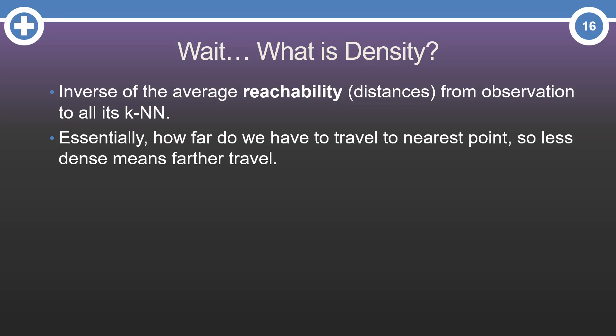Density is the inverse of the reachability from an observation to all its k-nearest neighbors. Wait, what is reachability? Didn't think this would be a grammar lesson, did you? Well, reachability is like it sounds. It's essentially how far we have to travel to get to the k-nearest point. So less dense means we travel further, not as reachable.